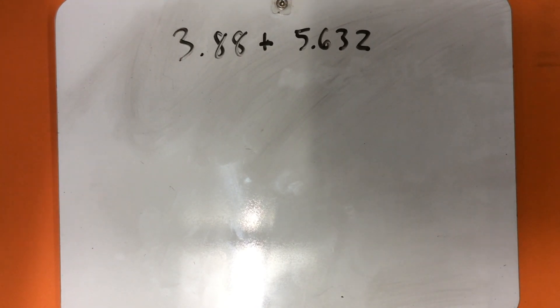This last question may look really difficult, but it's actually pretty simple if you break it down by place value. We start at the smallest place value, and that is thousandths. So the first number has 3 ones, 8 tenths, 8 hundredths, and no thousandths. The second number has 5 ones, 6 tenths, 3 hundredths, and 2 thousandths.